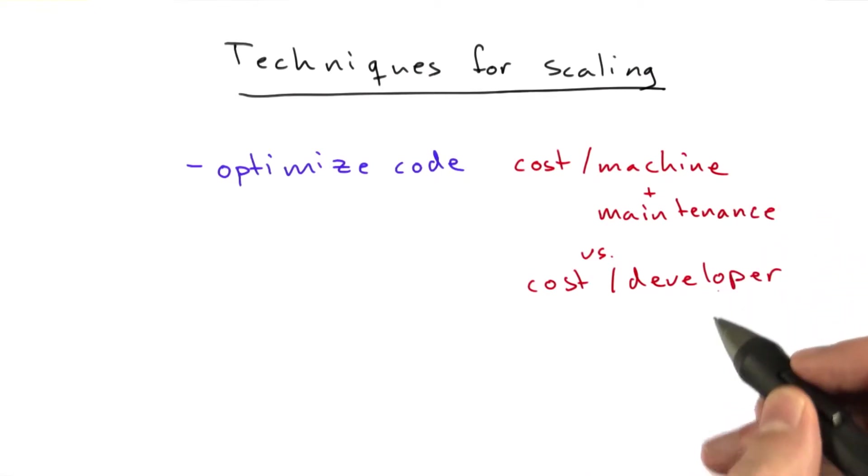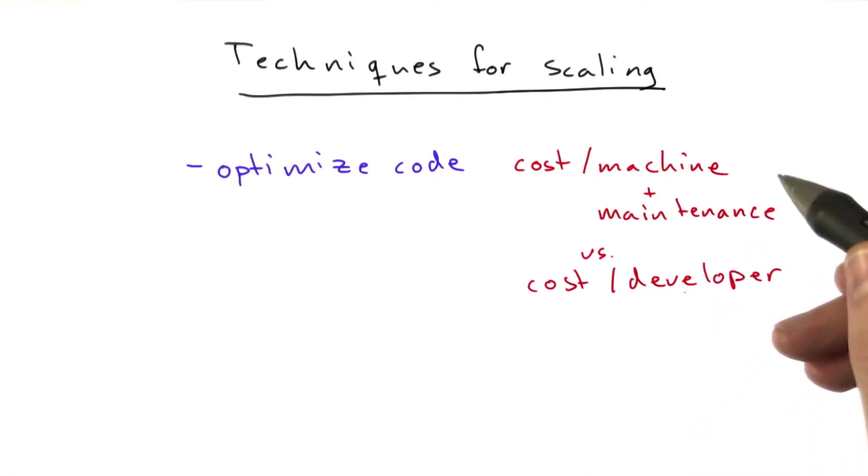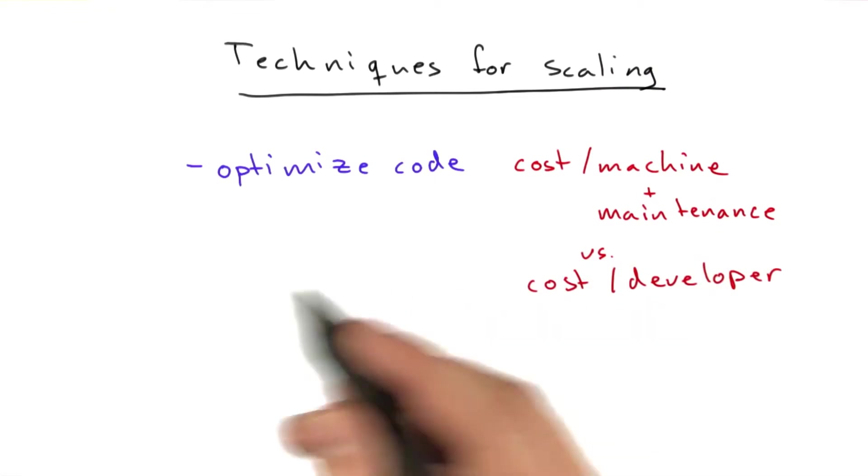At my company, that's something we think a lot about. What does it cost to pay a developer, and what does it cost just to add another machine? Kind of a big trade-off there.